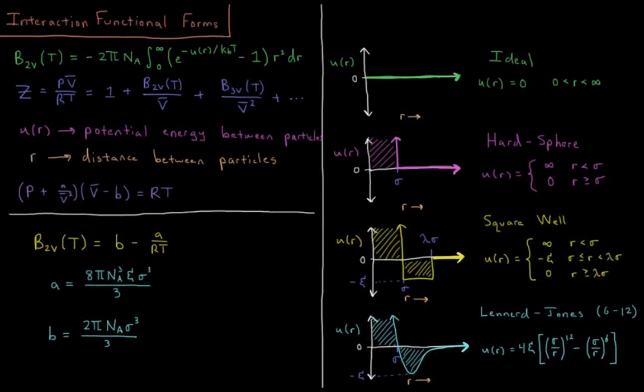This video will discuss the functional forms for how gas particles interact as a function of distance. When we looked at the virial equation of state, our compressibility factor Z was equal to pressure times molar volume over gas constant times temperature, which equals 1 for an ideal gas, but for a non-ideal gas we have this Taylor series in molar volume: 1 plus the second virial coefficient divided by V-bar plus the third virial coefficient divided by V-bar squared, et cetera.